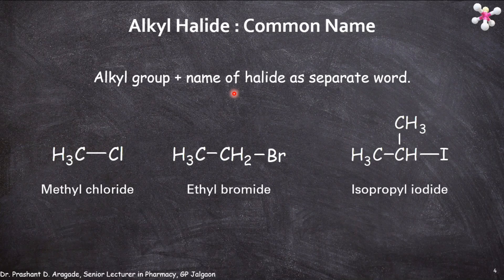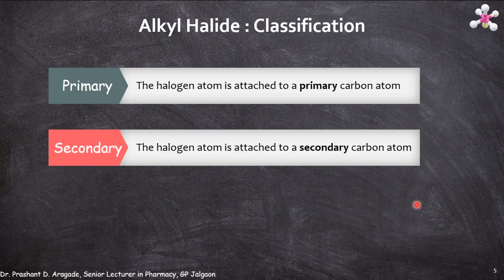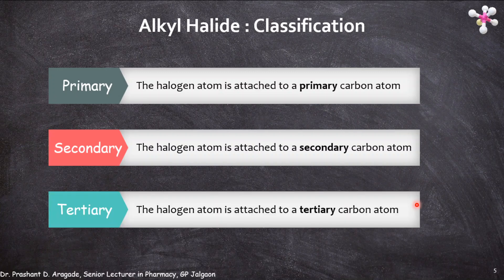Let's see the classification of alkyl halides. It is classified into primary alkyl halides, where the halogen atom is attached to a primary carbon atom; secondary alkyl halides, where the halogen atom is attached to a secondary carbon atom; and tertiary alkyl halides, where the halogen atom is attached to a tertiary carbon atom. The classification depends upon which type of carbon atom the halogen is attached to.